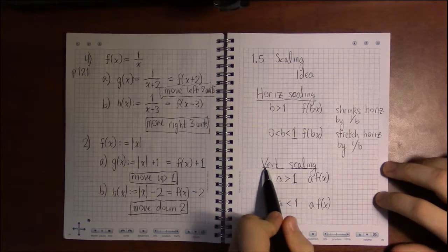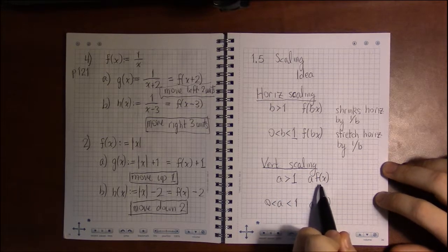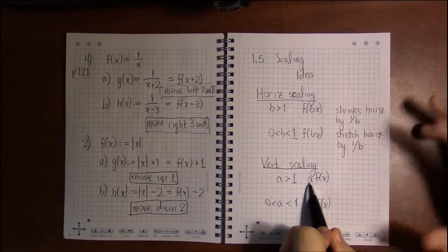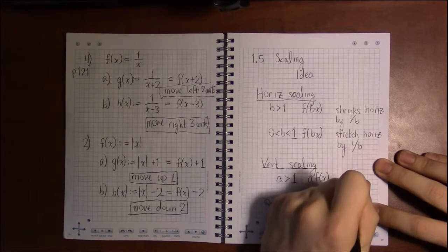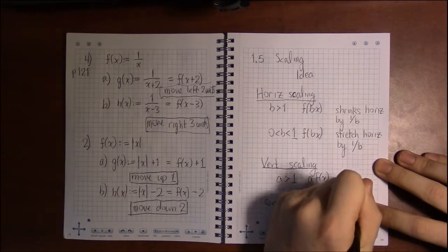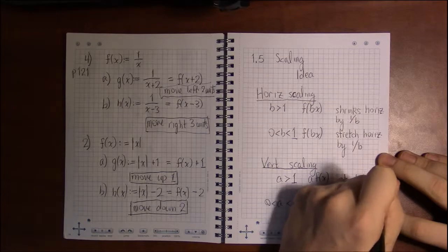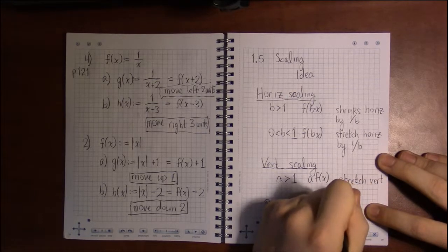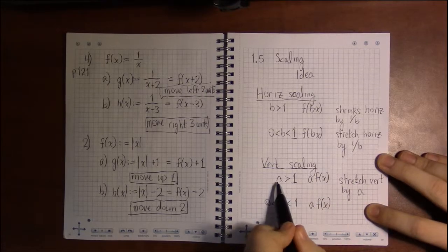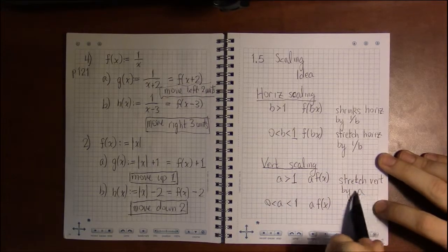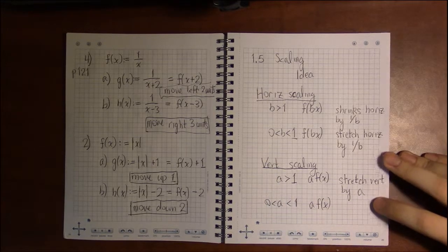So vertical does exactly what you want it to do. Multiplying the y values, multiplying the function by, say, 2 will indeed stretch the graph vertically by 2, by whatever that parameter is. So if it's 2, 3, 4, whatever, it'll stretch vertically by 2, 3, 4, whatever the value of a is.